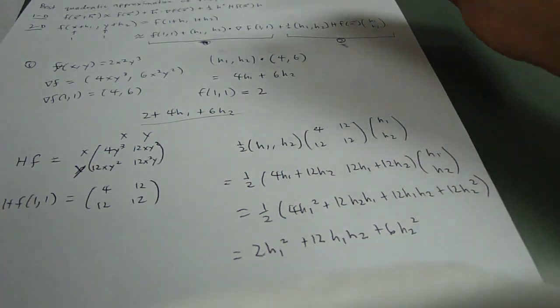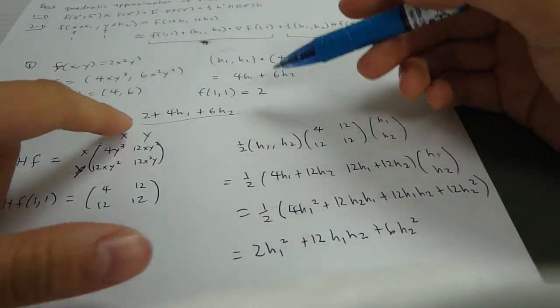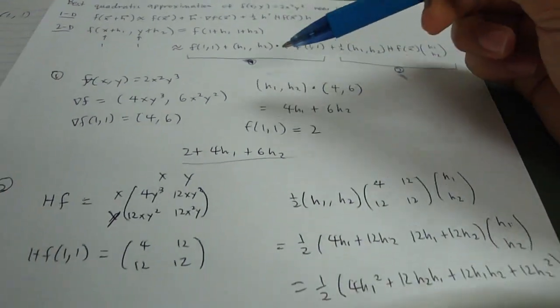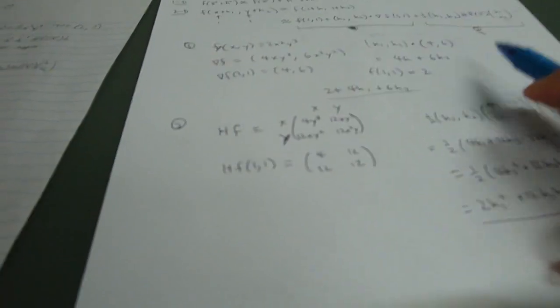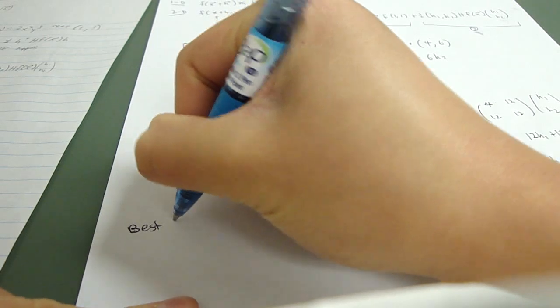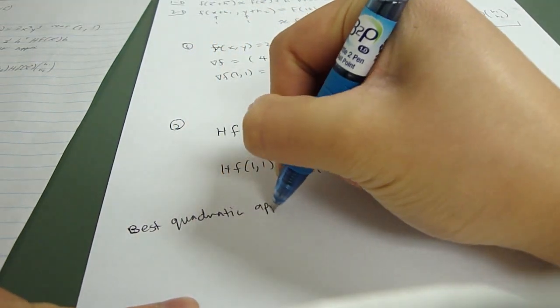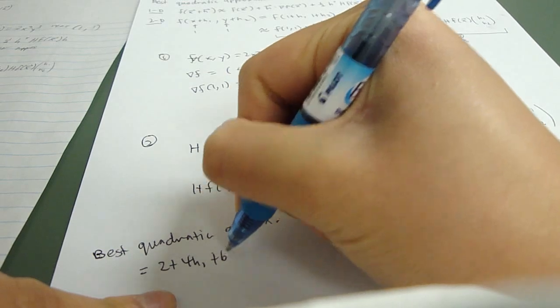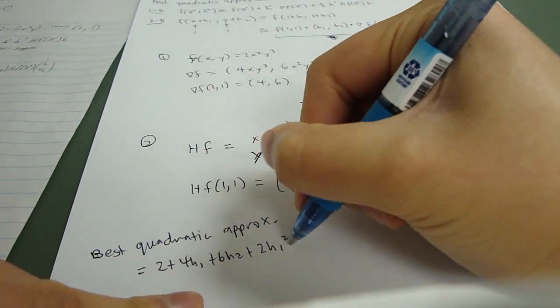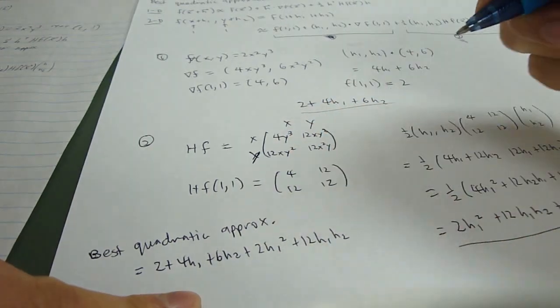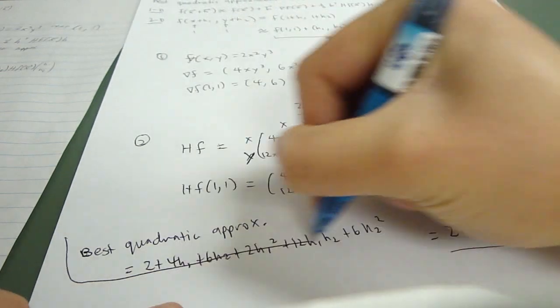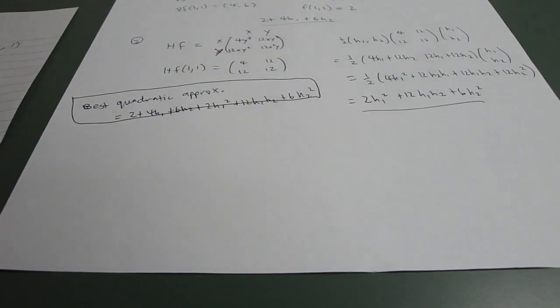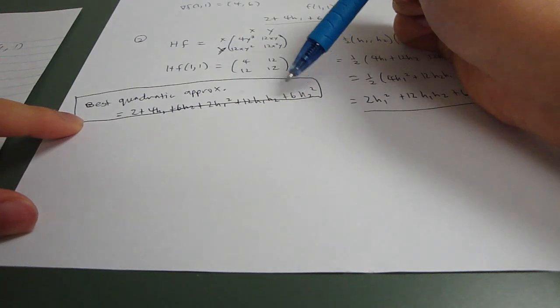So, to get the best quadratic approximation, I have both parts of the original equation. This is the equation. I have both parts. So, you just add it together to get the best quadratic approximation. So, 2 plus 4h1 plus 6h2 plus 2h1 squared plus 12h1h2 plus 6h2 squared. I hope you can still read that. Okay.